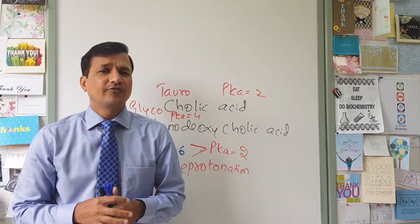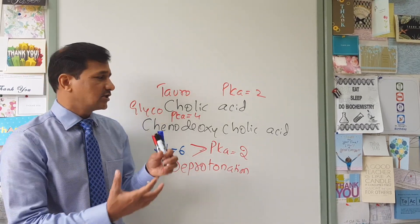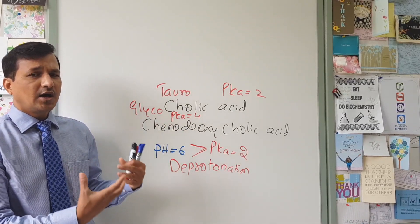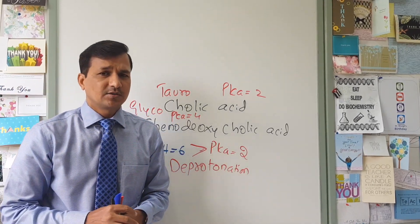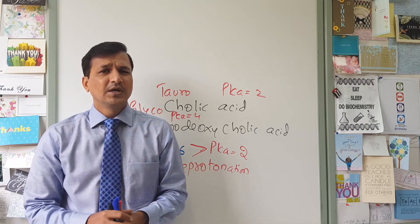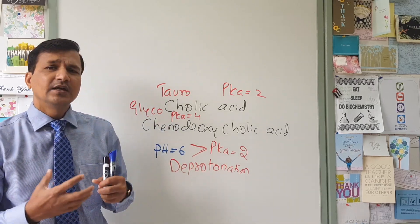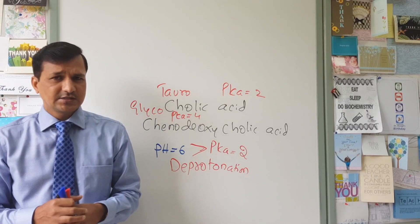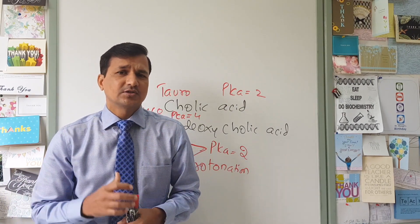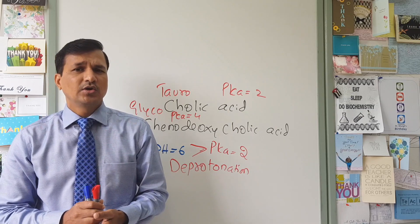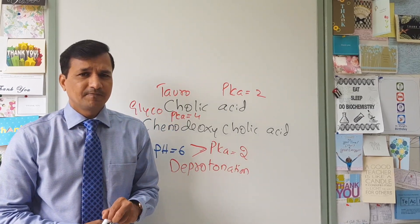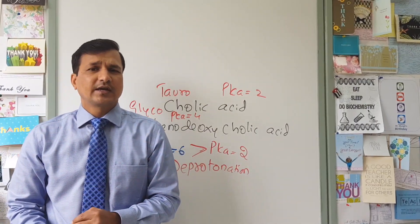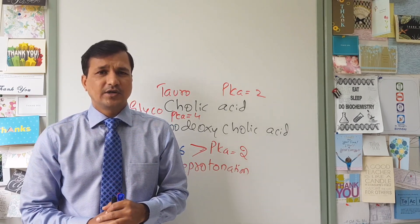This covers the formation of bile acids, why conjugation occurs, the relationship between pH and pKa, and how it facilitates efficient emulsification in the duodenum. I hope this video has helped you understand bile acid synthesis and the different types of bile acids. If you have any questions, please put them in the comment section below. Make sure to subscribe to the channel so you get notified when I upload a new video. Thanks again and see you in the next video.